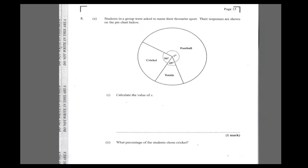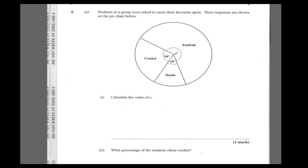We're at the best question on the paper again in CSEC mathematics. This is the best question on the paper, which is statistics. It says calculate the value for x. Students in a group were asked to name their favorite sport. Their responses are shown on the pie chart: x degrees for football, x degrees for cricket, and tennis.